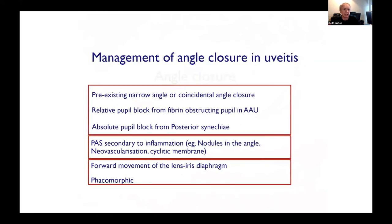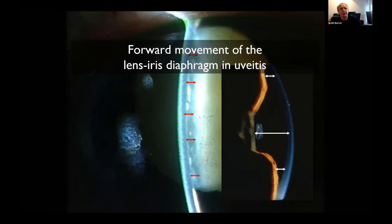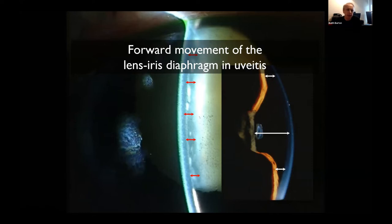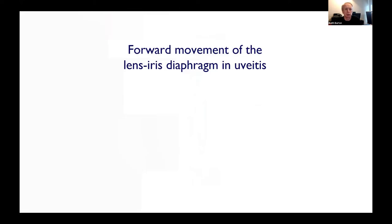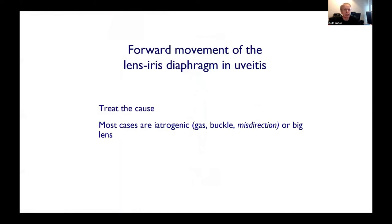For surgical treatment of angle closure: I've mentioned forward movement of the iris-lens diaphragm, chronic synechial closure, and pupil block — you really have to make the clinical diagnosis very carefully. On the left, with a very shallow central anterior chamber, this was actually phacomorphic but could easily be forward movement of the lens-iris diaphragm, posterior scleritis, VKH, or a tight scleral buckle. The pupil block here shows a very deep central chamber — completely different from a very shallow central chamber. There's no real excuse for getting it wrong.